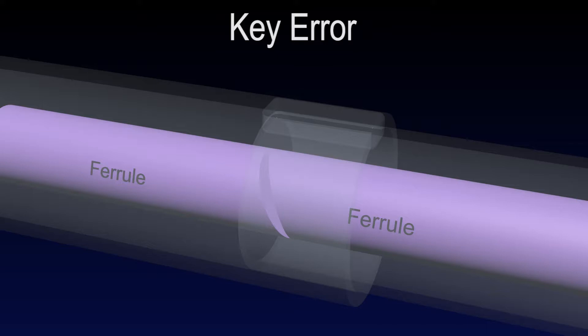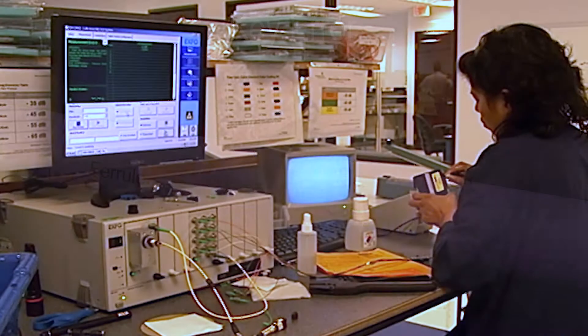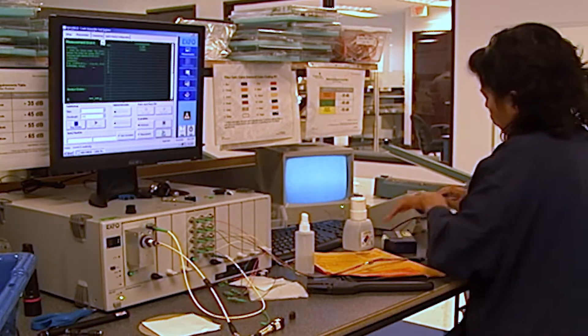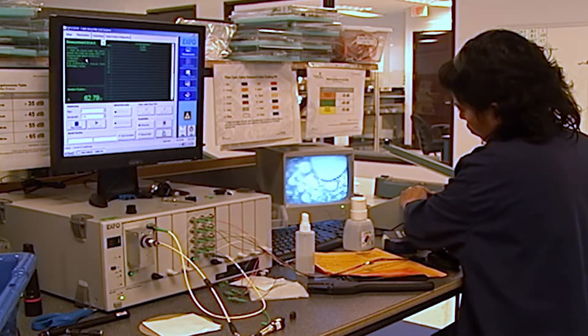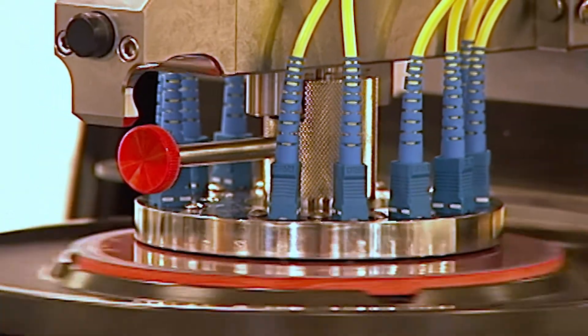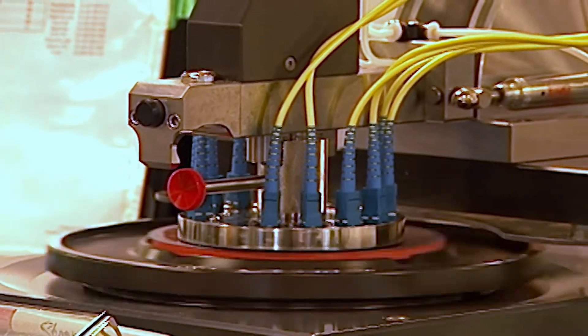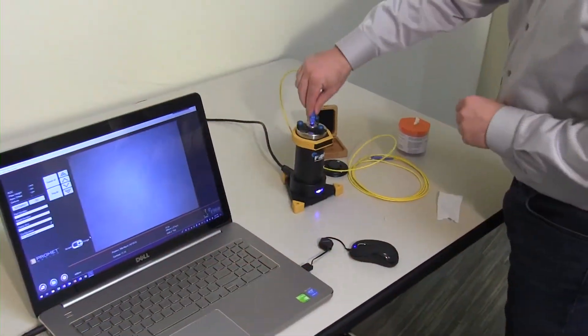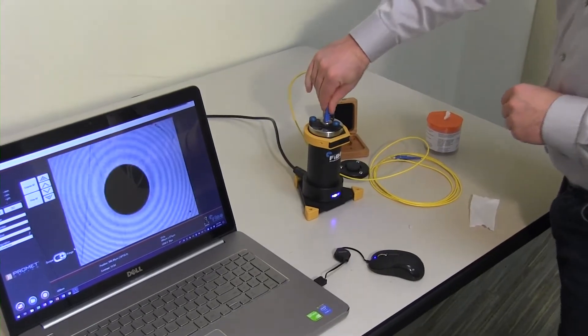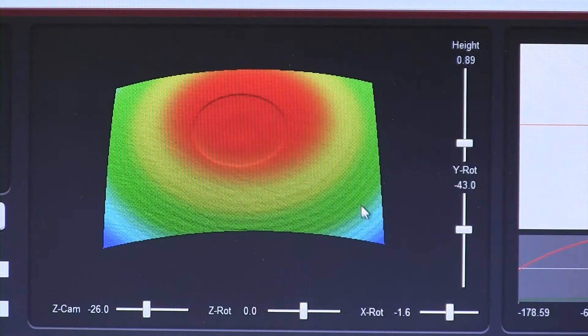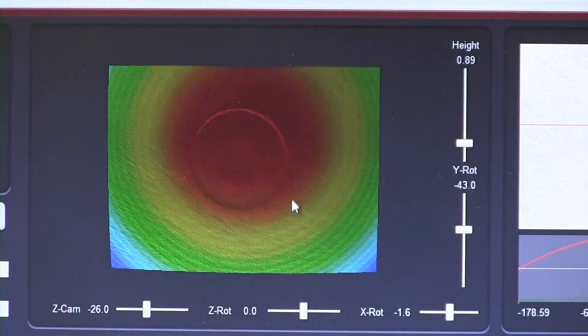The importance of these parameters in physical contact connectors demands that 100% of end-face geometry be inspected. Slight variations in ferrule dimensions, hardness, as well as differences in polishing components and processes can have a profound influence on the quality of end-face geometry. The interferometer, because it completely maps the three-dimensional contours of a ferrule end-face with nanometer resolution, is the only instrument capable of verifying these critical parameters.